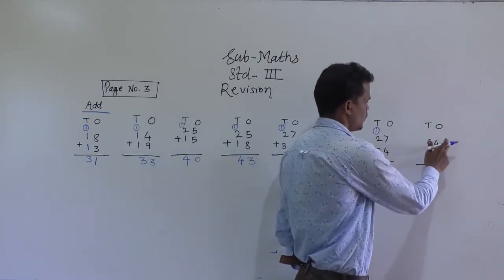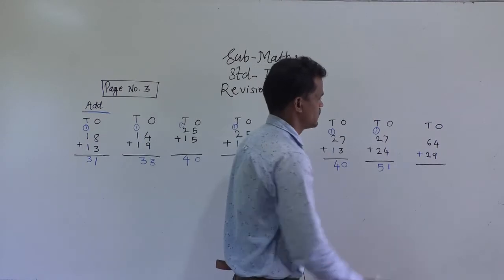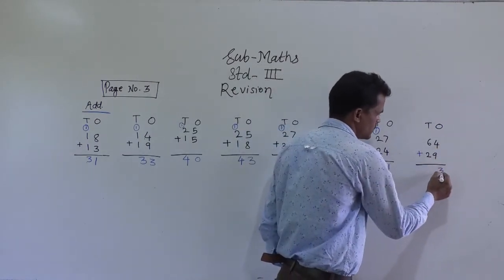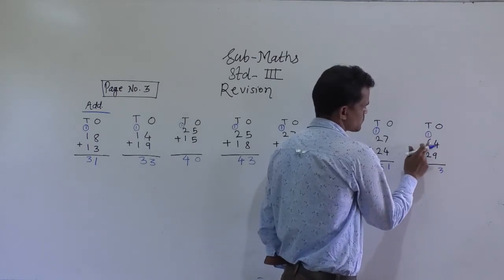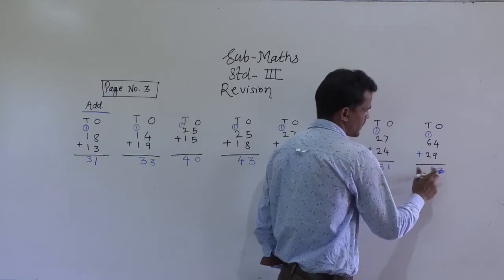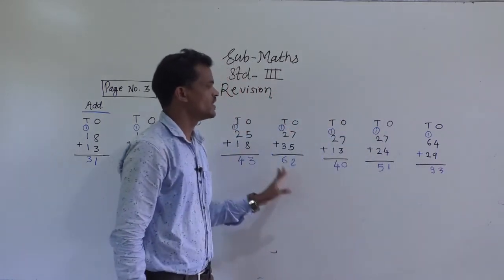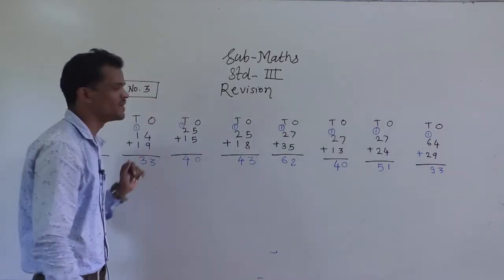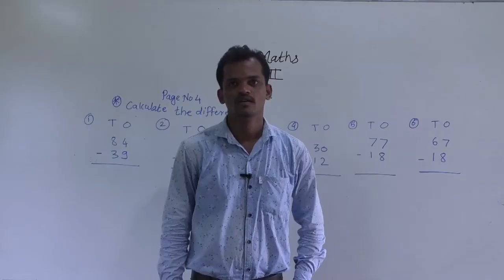Next example: 64 plus 29. 4 plus 9 is 13, so write 3 here and carry 1. 6 plus 2 is 8, plus 1 carry is 9. So 93 is the answer. Remaining examples from page number 3, you have to solve.